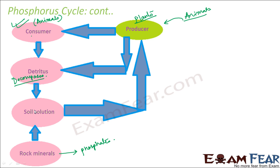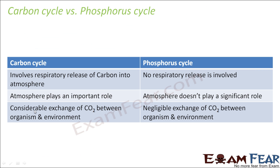With this we have learned about two cycles: the carbon cycle and the phosphorus cycle. Let us quickly compare them. In the carbon cycle, it involves respiratory release of carbon into the atmosphere, but in the phosphorus cycle there is no respiratory release and no involvement of the atmosphere. So in the carbon cycle the atmosphere plays an important role, whereas in the phosphorus cycle it does not.